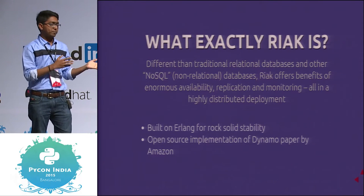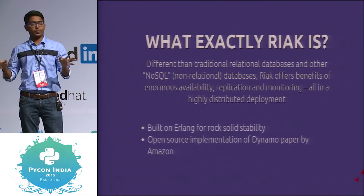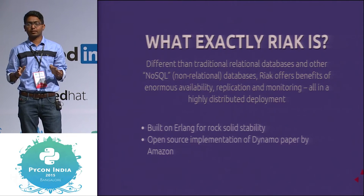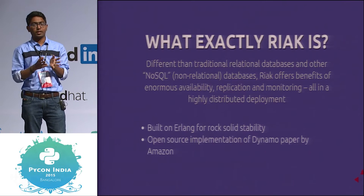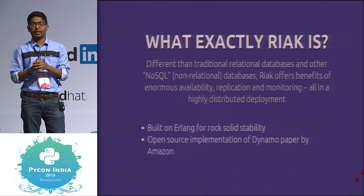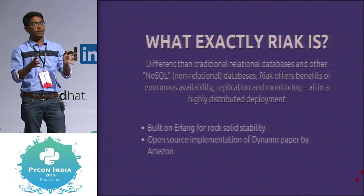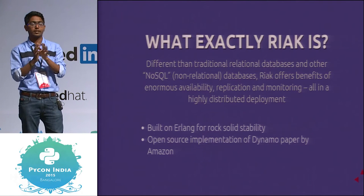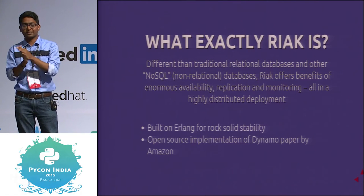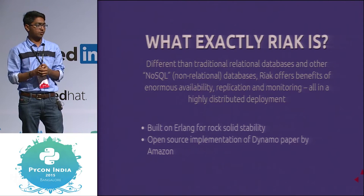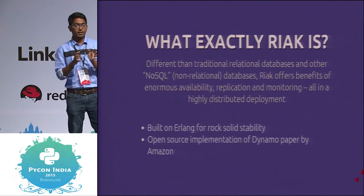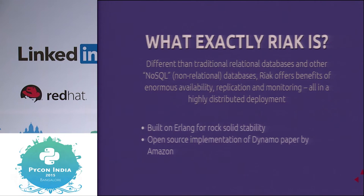In DynamoDB there is no master-slave architecture — everything is peer-to-peer. All nodes are equal and they know all other nodes. So there is no single point of failure. In MongoDB, if the master fails then everything is lost. But in Dynamo, everybody is a master, so everybody can see all the things.